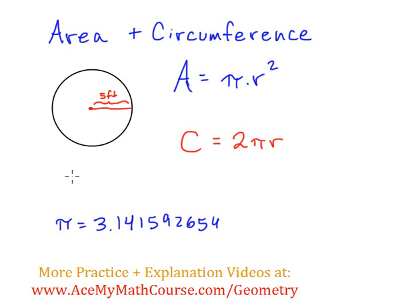So what is the area? Well, the area is just going to be pi times r squared. r is 5. So we're going to square the 5. 5 squared is 25.